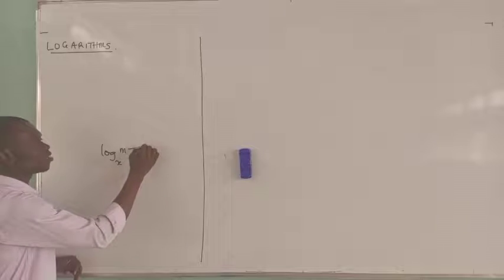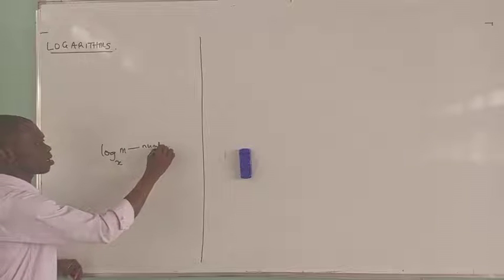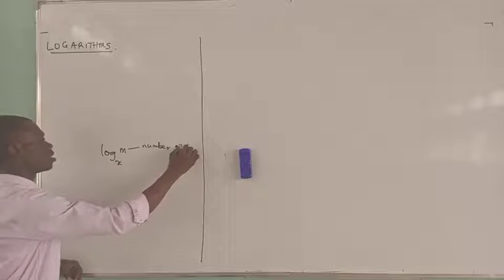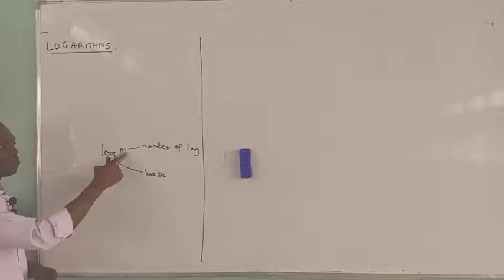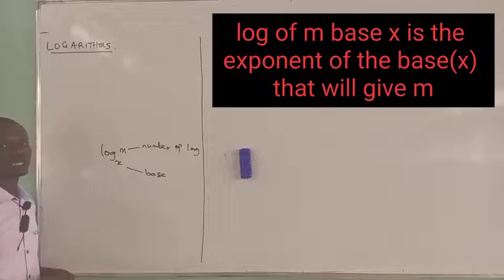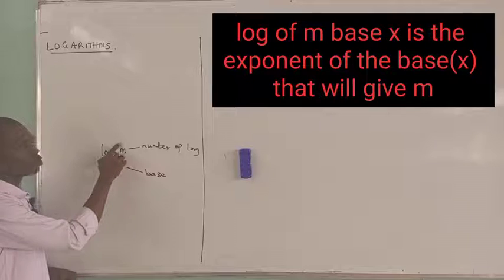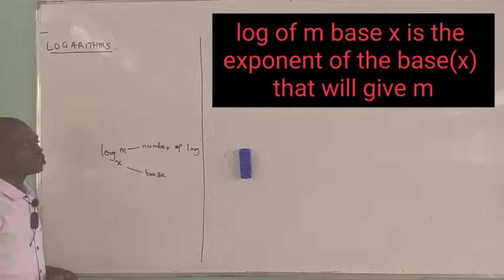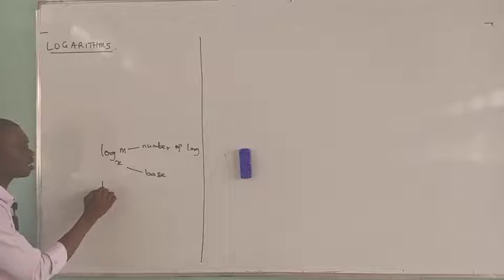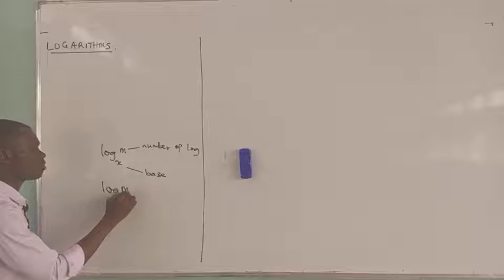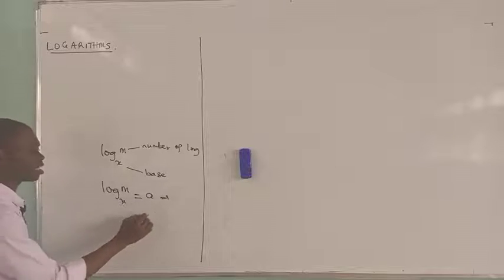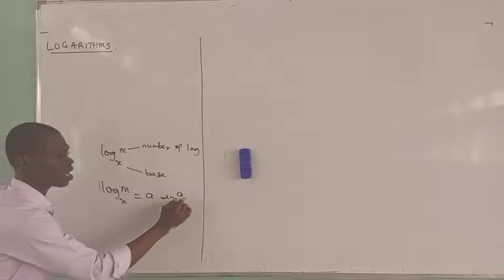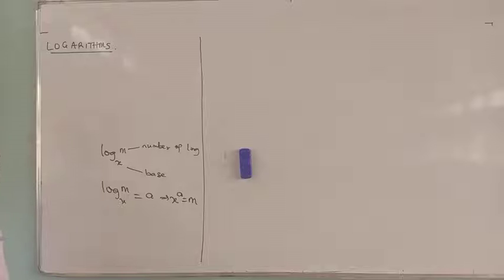This is called the number of the logarithm — the number of the log. And this one is called the base of the log. So the logarithm of this number M is the number that the power will be raised to in order to give you that M.